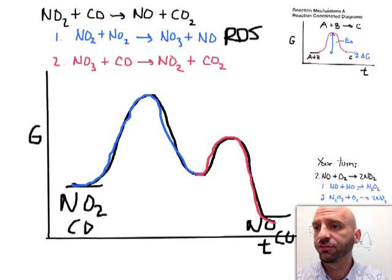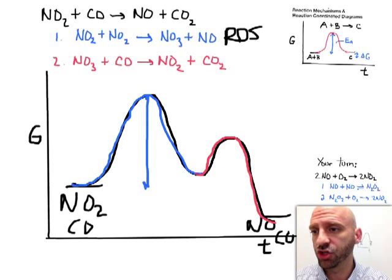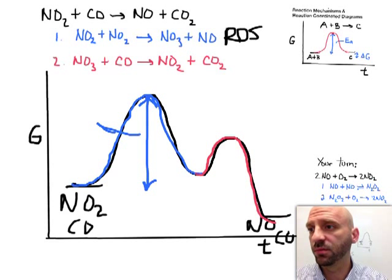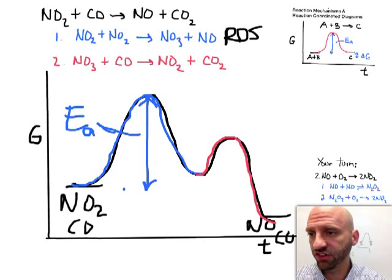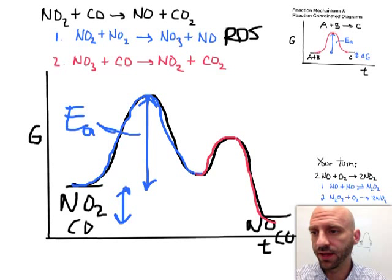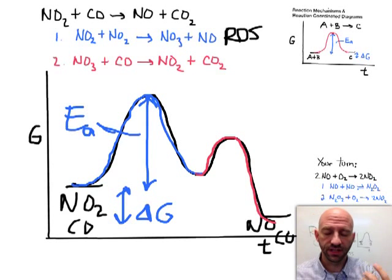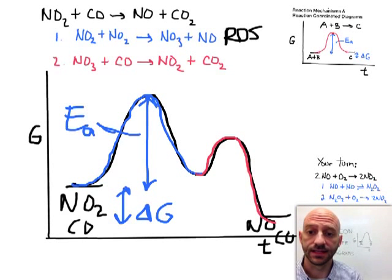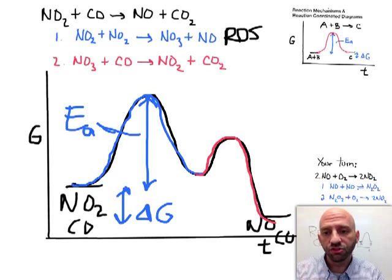This first step is where the activation energy comes from—that's my E sub a. And the difference from where I started to where I ended up, the net change, that's my delta G. You can see that it's negative, so that tells me the reaction's spontaneous.